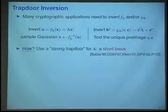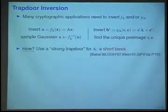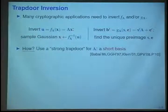How do you do this? You need a strong trapdoor for the matrix A, which is concretely something called a short basis, a short lattice basis, and you need to generate A together with such a basis.